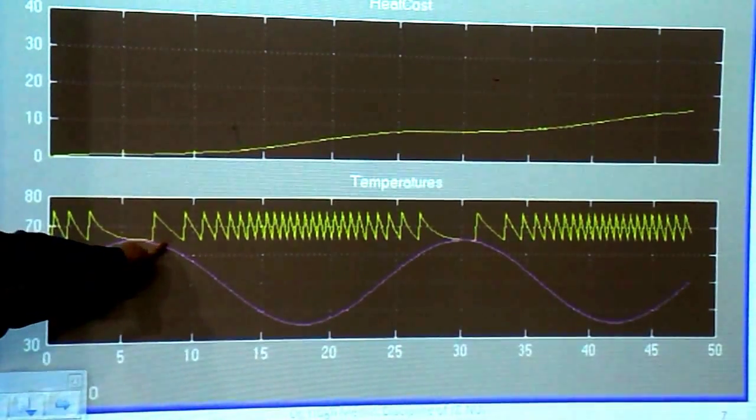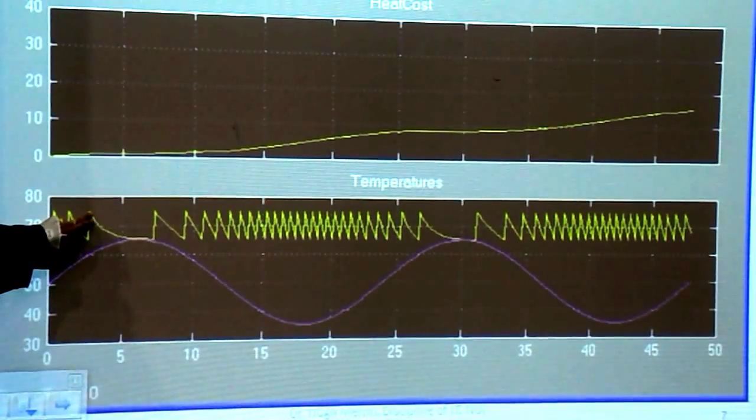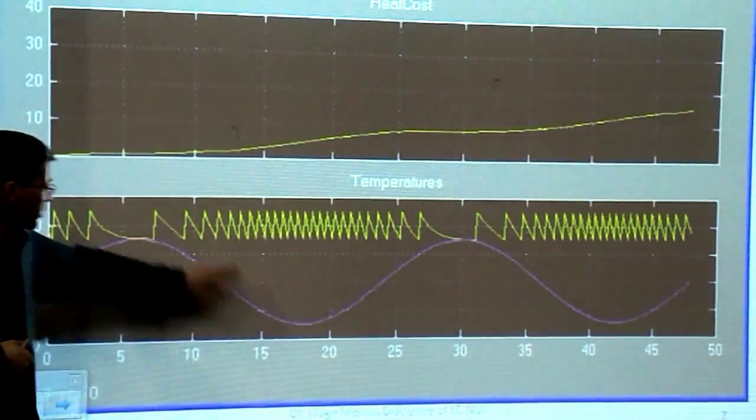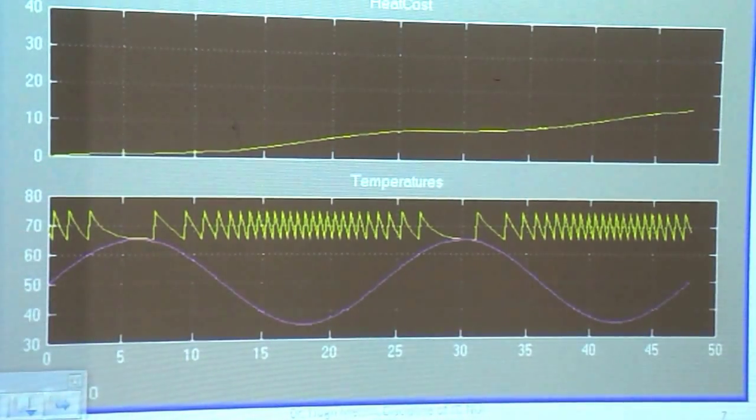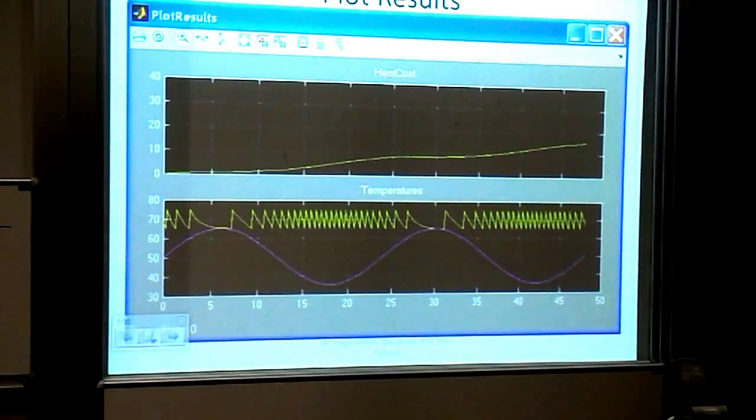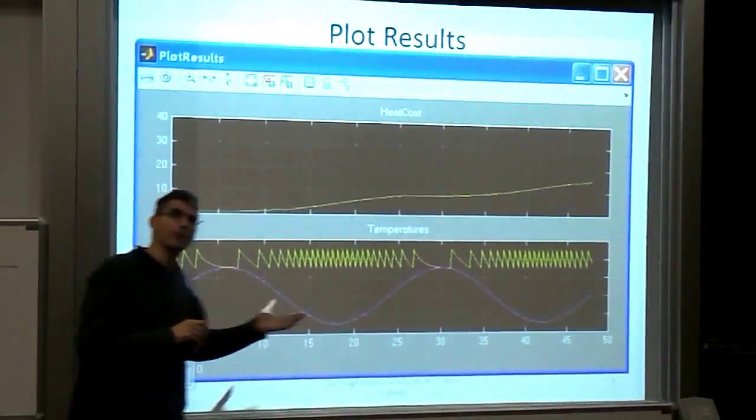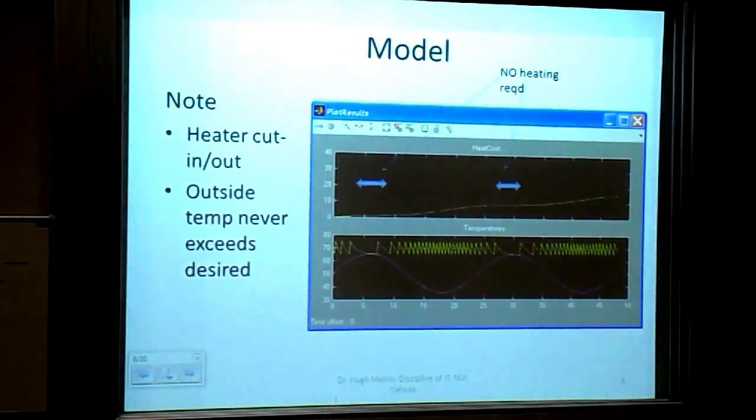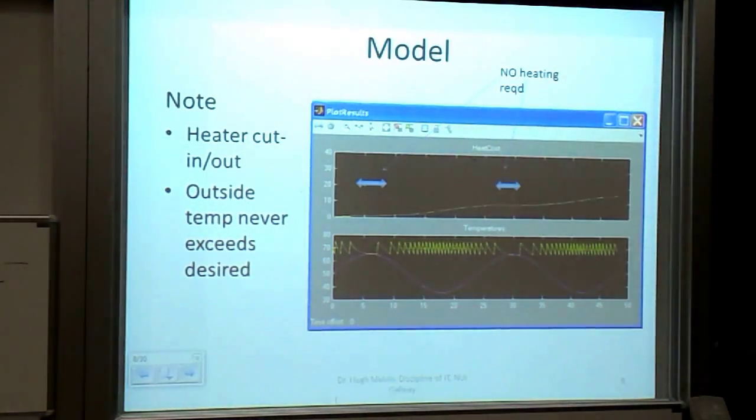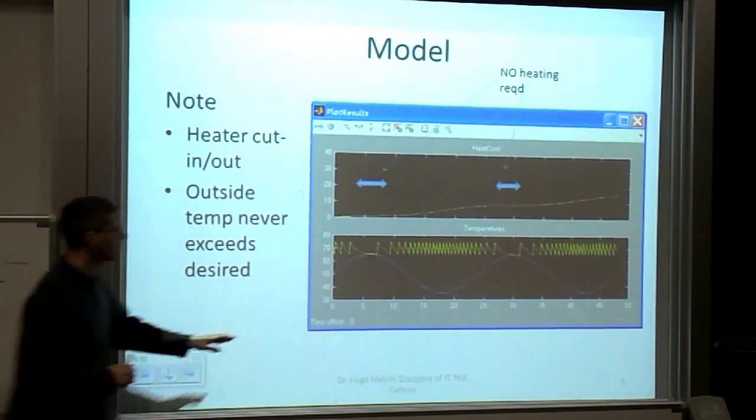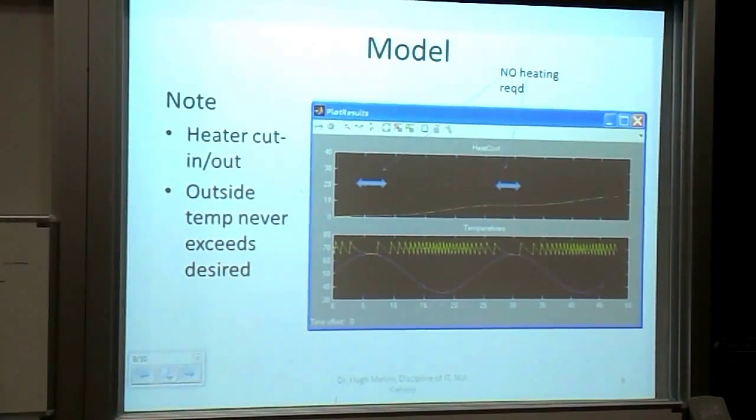Once the heater cuts in, it starts generating joules of energy per second. The temperature starts to rise. Once it hits a certain set point, it shuts down. The heater stops, the temperature slowly decays. Because the outside temperature is rising during the day, you can see that at a certain point the rate which the heater is cutting in and out diminishes. Then as the temperature starts to drop, we need more heating. This is a very practical example.